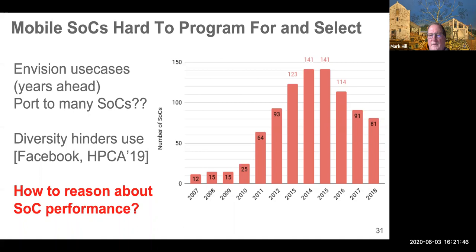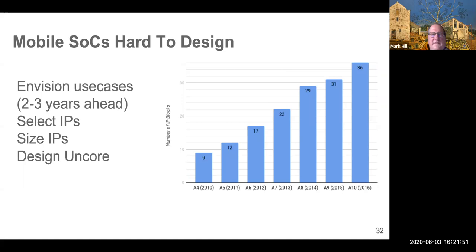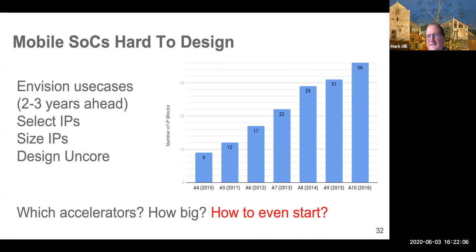So how do you reason about performance short of porting and developing simulation infrastructure? And that's even more important if you're designing one of these SOCs, because you got many, many degrees of freedom that are heterogeneous. You got to select the IPs. You got to size them. You get to design the un-core, the interconnection networks, et cetera. And how do you even start? Because you want to provide some evidence that something has the potential to be useful before you investigate it further.